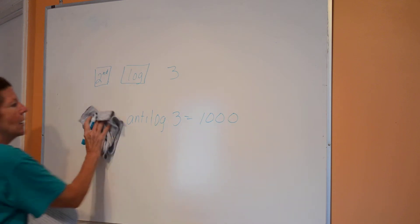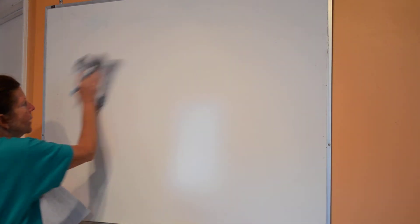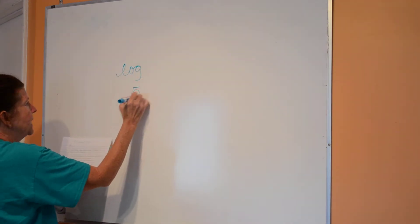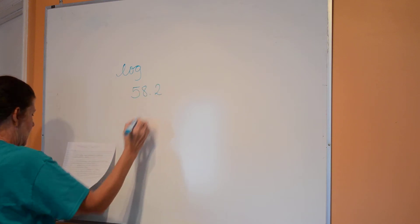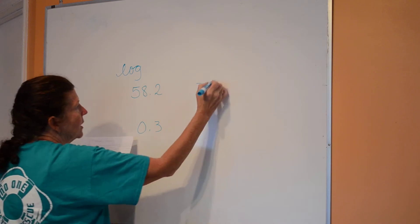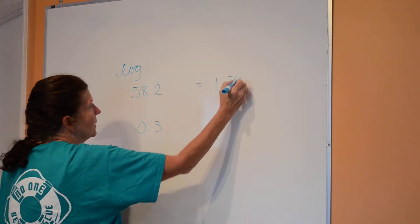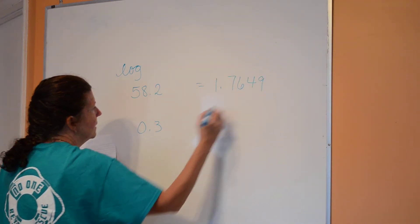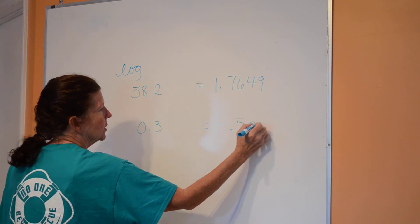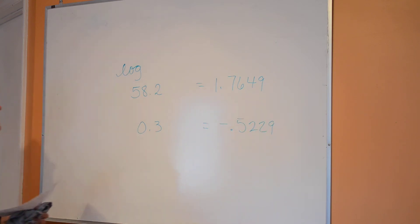So just for a review, go ahead and pick up your calculator and make sure you can do these. Find the log of 58.2 and find the log of 0.3. And you should get 1.7649 and negative 0.5229. So that's just strictly calculator use.